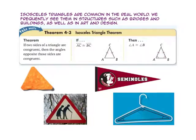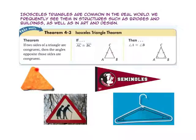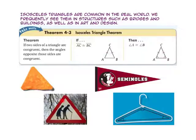Isosceles triangles are common in the real world. We frequently see them in structures such as bridges and buildings, as well as in art and design. Take a look at the triangles below. In the Dorito, the pennant, the walking sign, and the coat hanger, we can identify two congruent sides — the legs — and the base in each case.